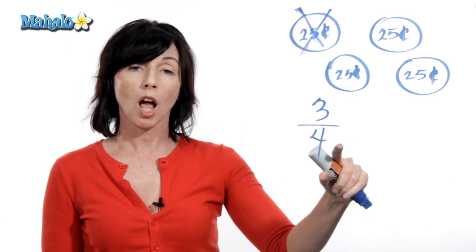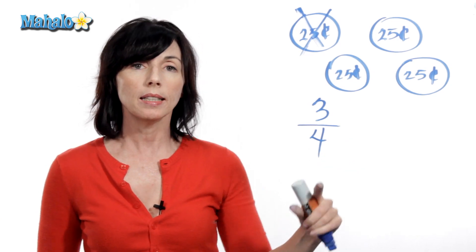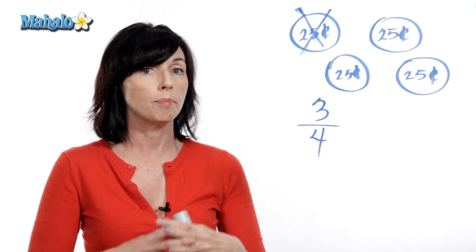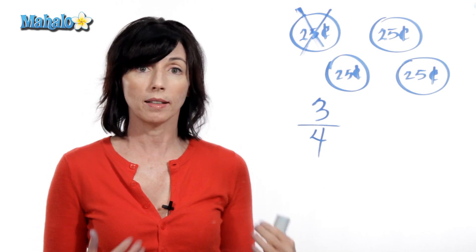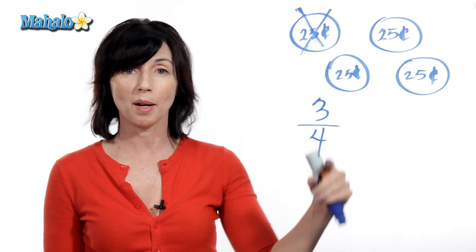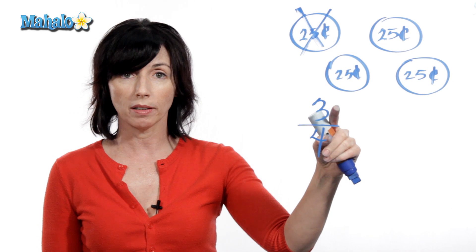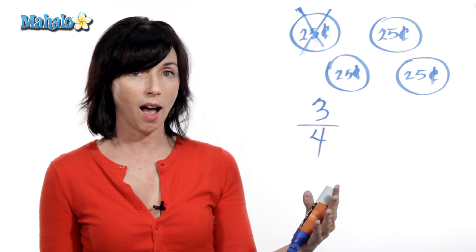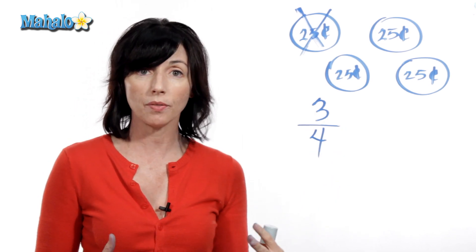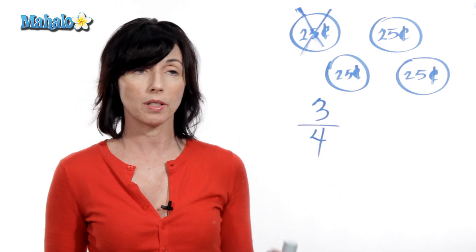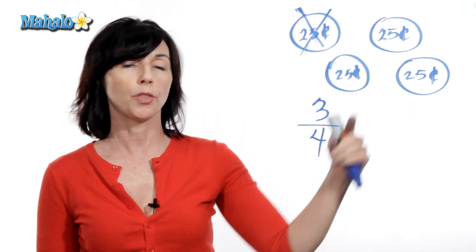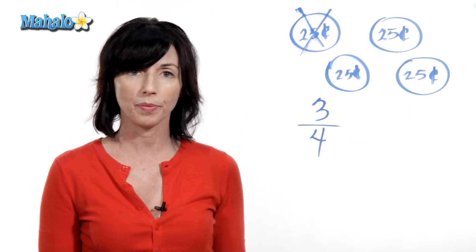The denominator, the number on the bottom, indicates how many pieces make up the whole thing. In my case, how many quarters made up my whole dollar. And the numerator, the number on the top, indicates how many parts of that I have left. So in my case, it represents the three quarters that I have left.